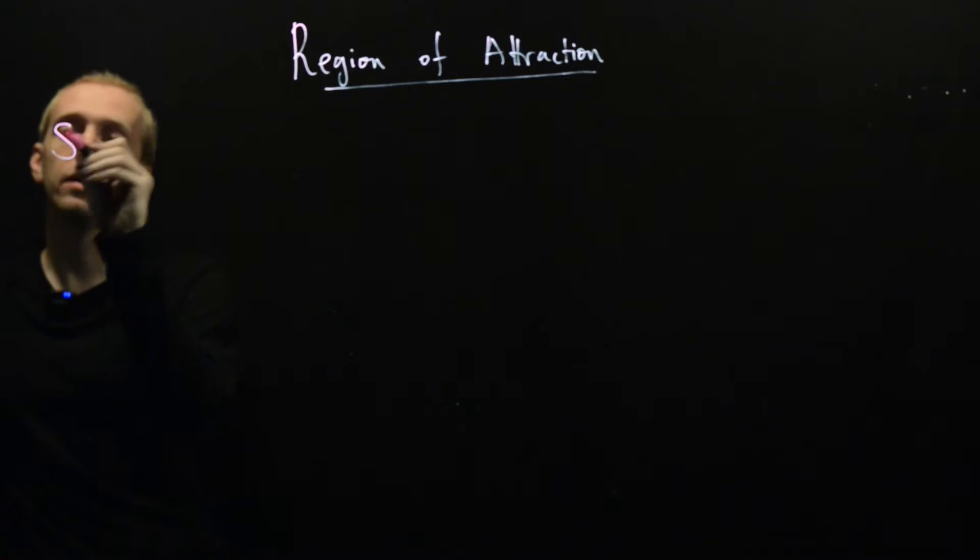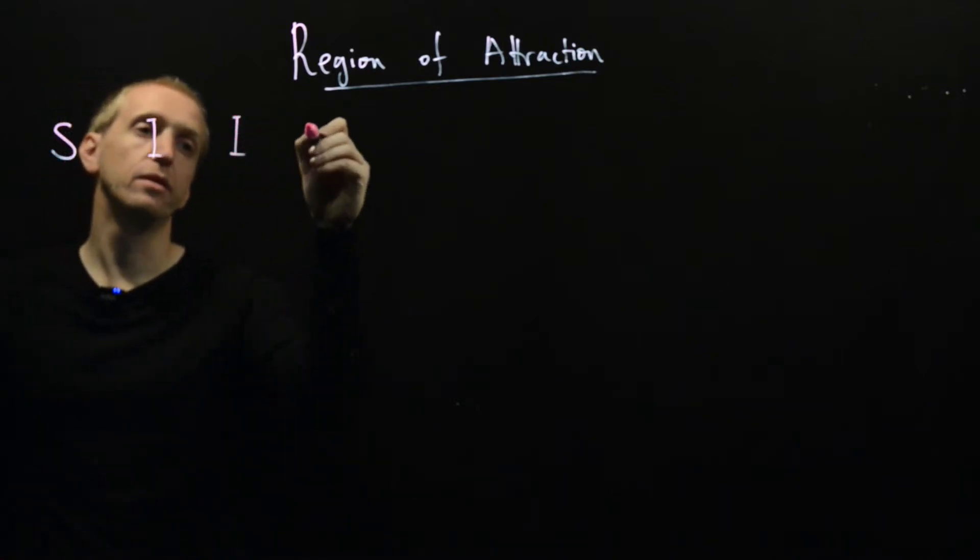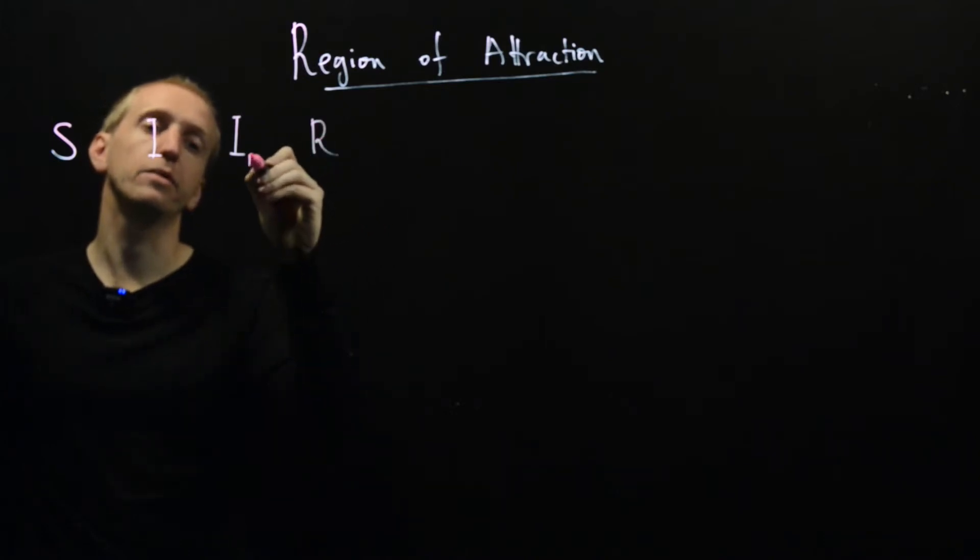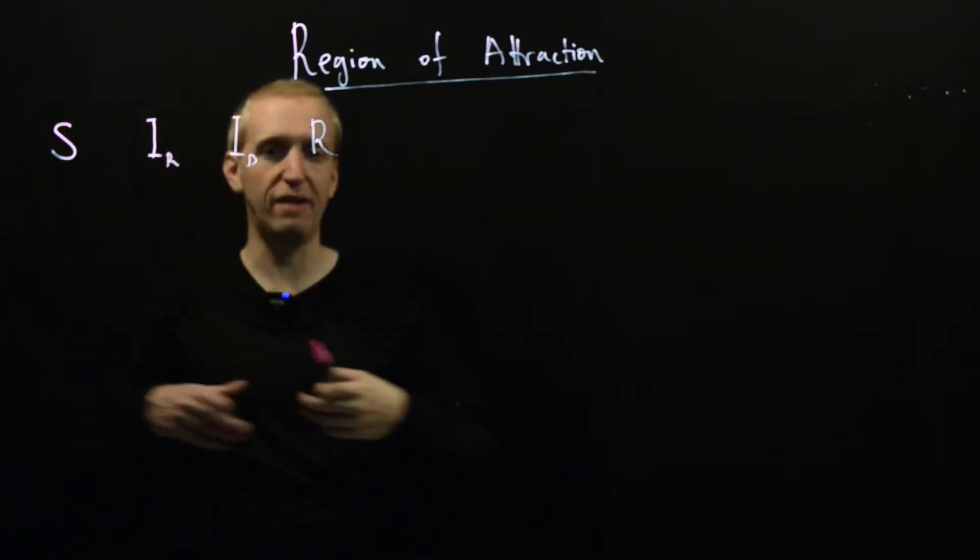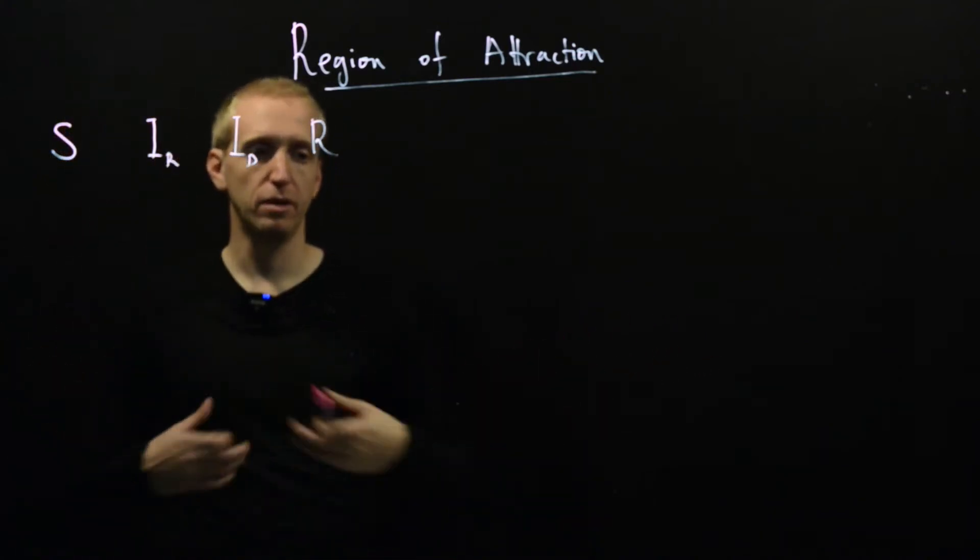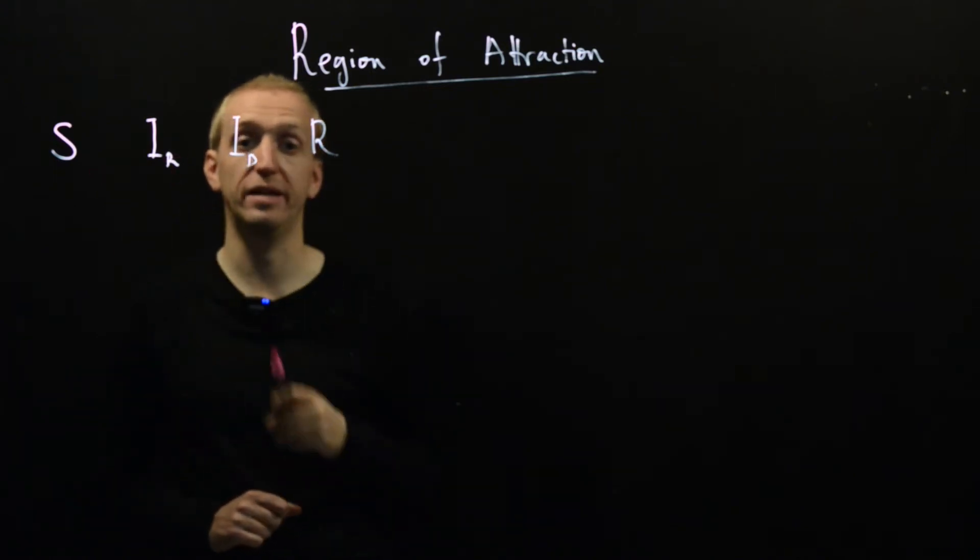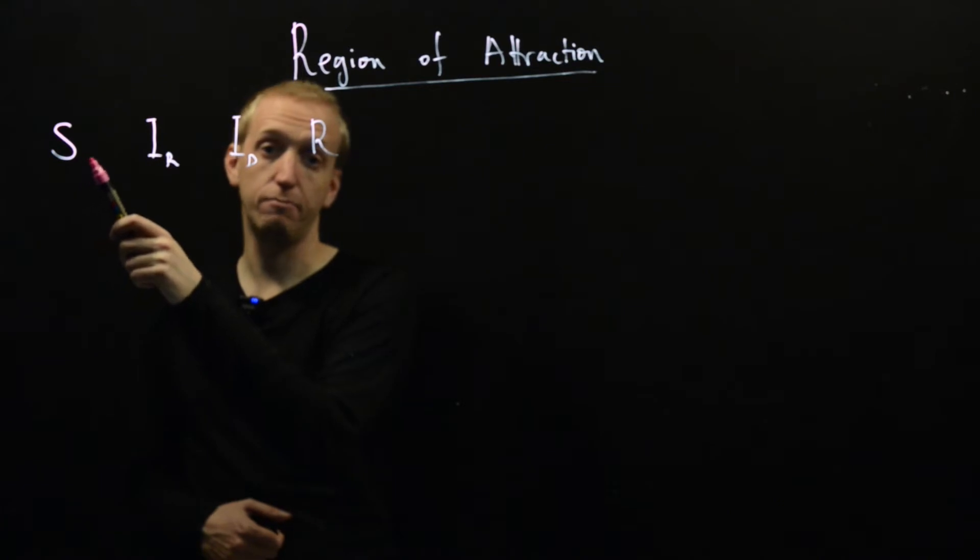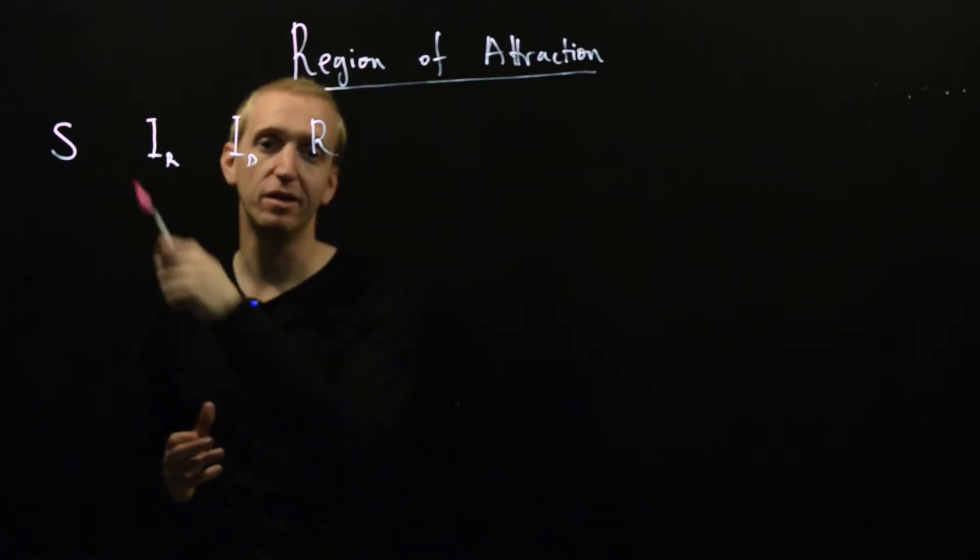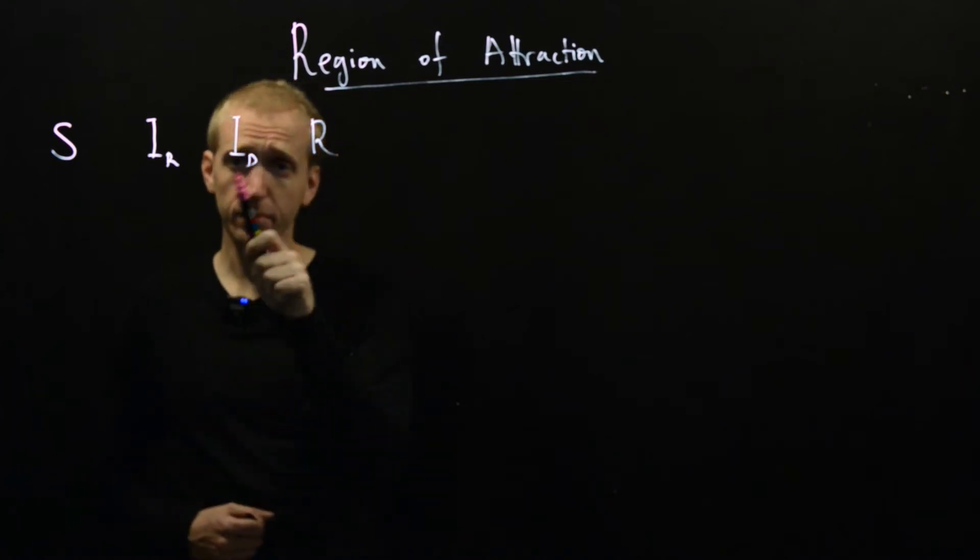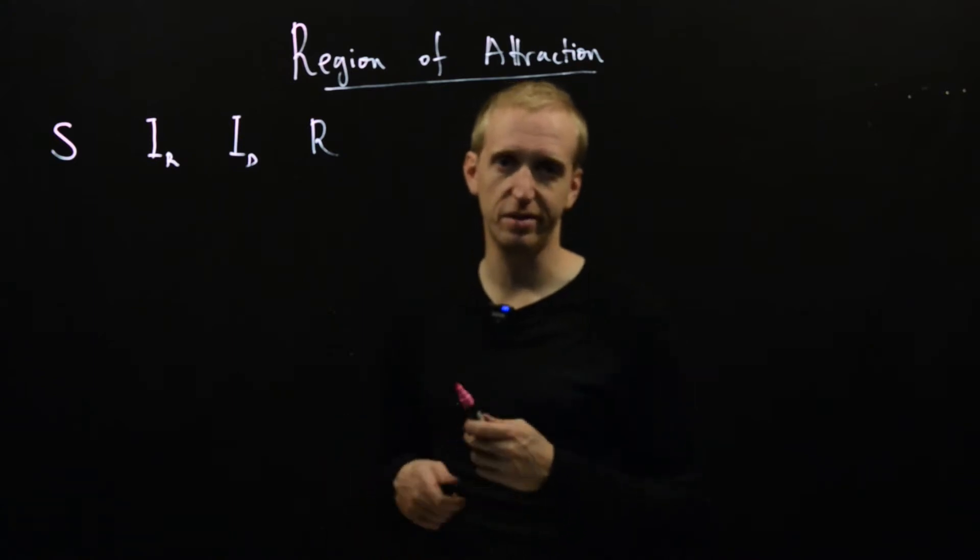So what goes into this epidemic model with test and trace? Well, we have four distinct populations: S, IR, ID, and R. And you have a population of people who are being exposed to a disease and they must belong to one of these four categories. So S, these are the people who are susceptible to the disease.